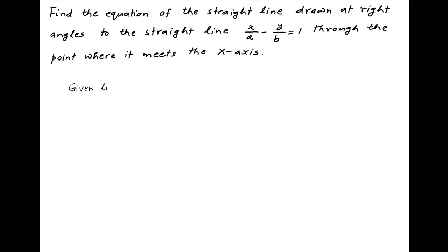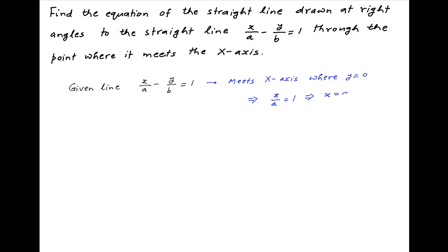We are given the line x upon a minus y upon b is equal to 1. This meets the x-axis when y is equal to 0, which implies that x upon a is equal to 1, and therefore x is equal to a. Therefore this line meets the x-axis at the point (a, 0).